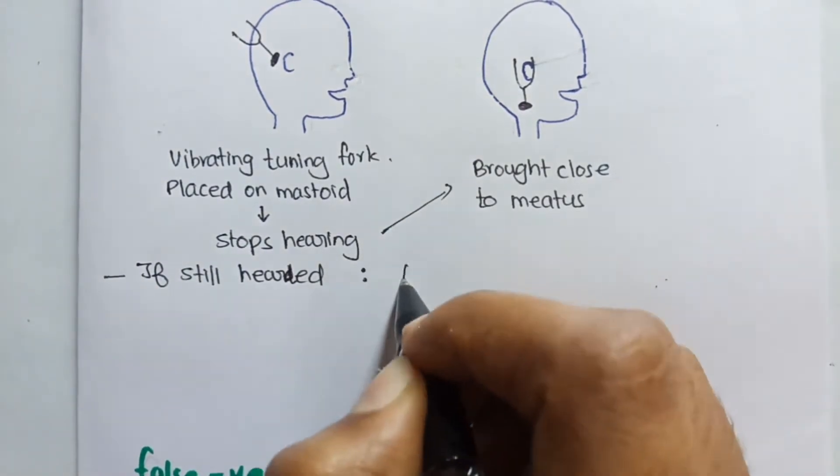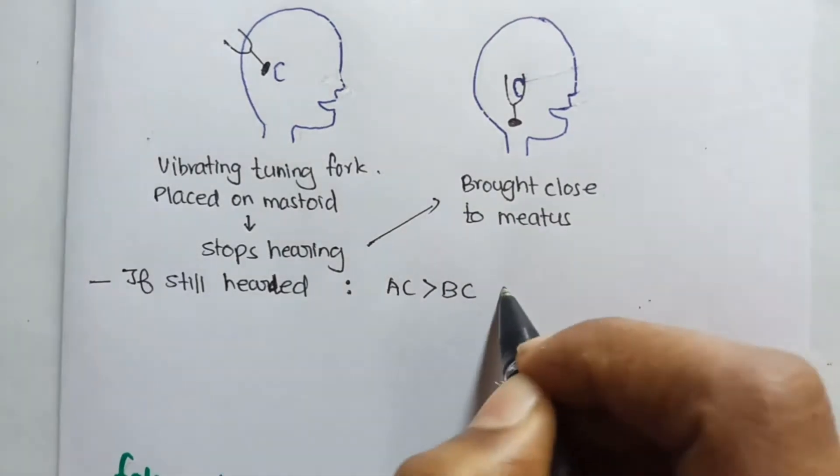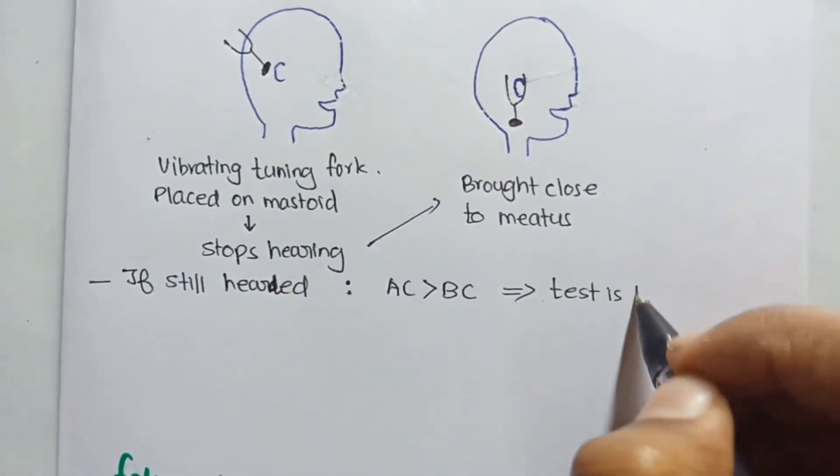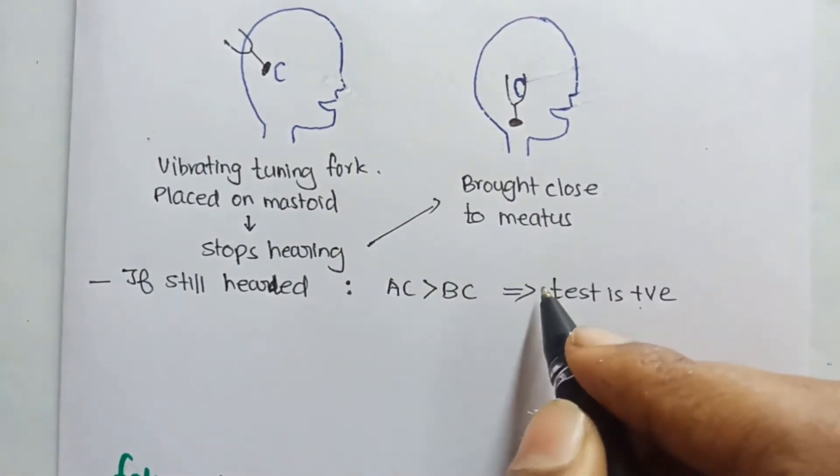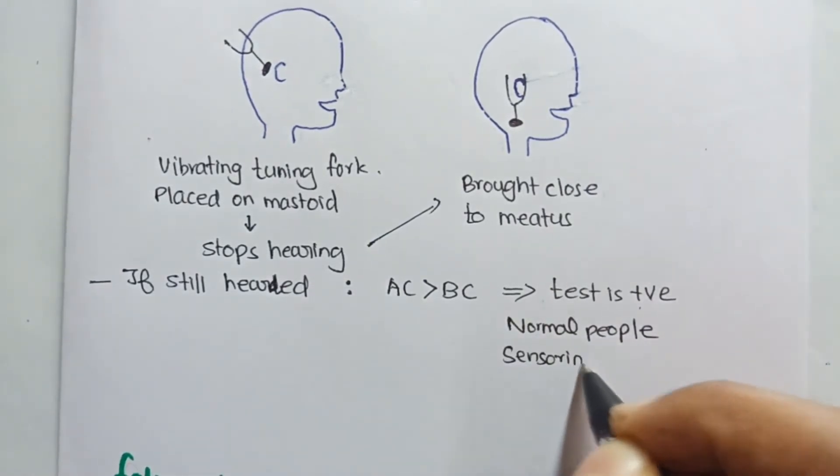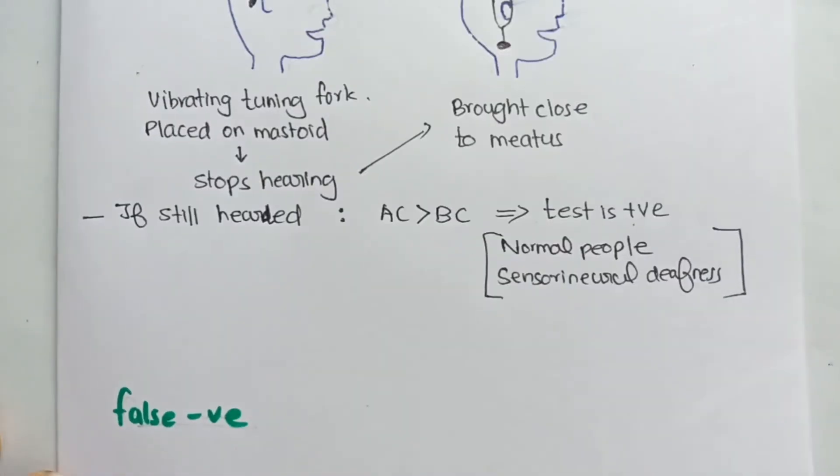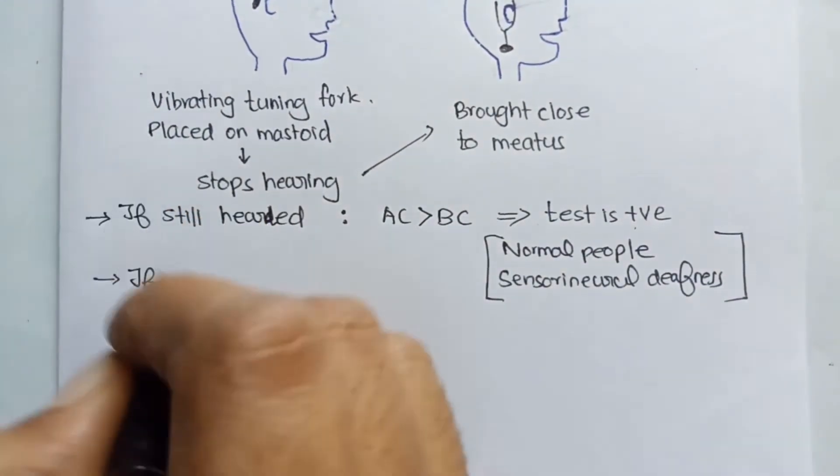It means that the air conduction is better than the bone conduction, which is what is usually seen. So we can say that the test will be positive. The positive Rinne's test is seen in normal people and also in cases of sensorineural deafness.